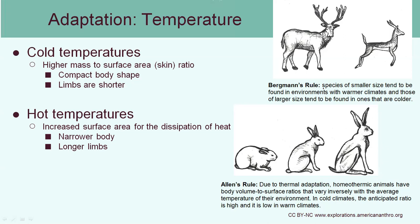In comparison, at hot temperatures we want to increase the surface area to help dissipate heat. You might be the same mass as another individual but be taller, thinner, and narrower. A good example of this is Allen's rule, which has to do with body volume-to-surface ratios. You can see in three types of rabbits: the Arctic rabbit is more condensed with smaller appendages and smaller ears, whereas the rabbit that lives in the desert is very lanky with very long, thin limbs, and really long ears that also help to dissipate heat.